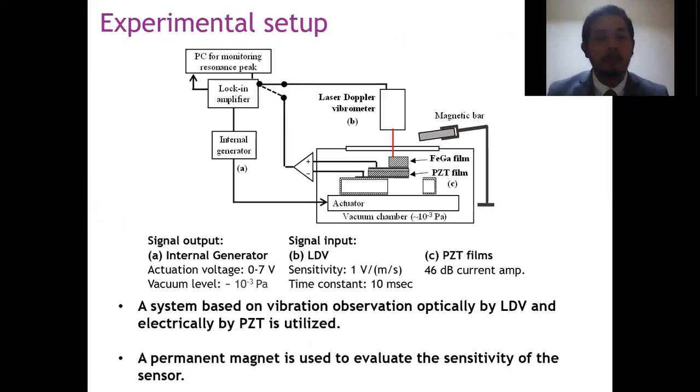These are the experimental setup to evaluate our device. A system based on the vibration observation optically by the laser Doppler Vibrometer and electrically by the electrical charge produced by the PZT. A permanent magnet is used to evaluate the sensitivity of the sensor.